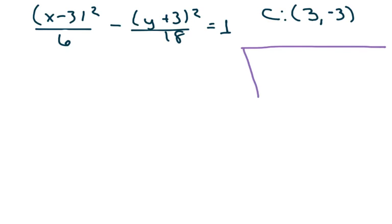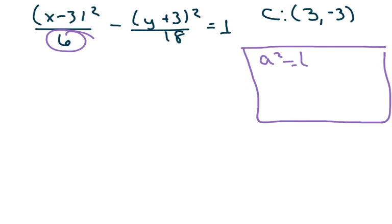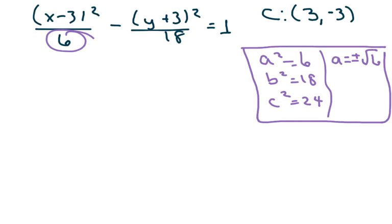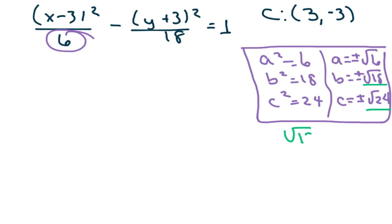The center is (3, −3). Now for the key values: a² = 6, b² = 18, and c = ±√24. I won't simplify these yet because I need to know where they are on the graph. The square root of 18 simplifies to 3√2, and the square root of 24 simplifies to 2√6.